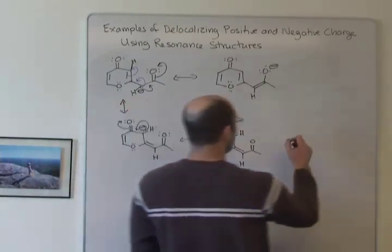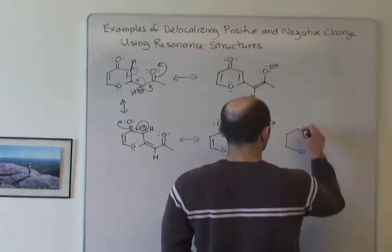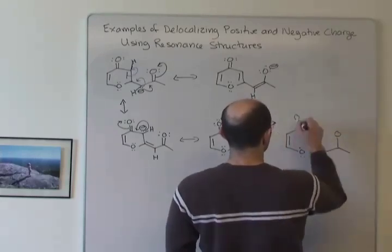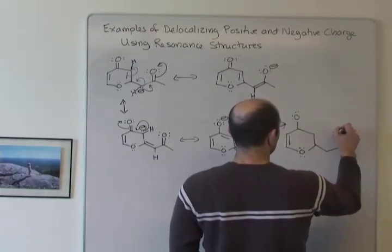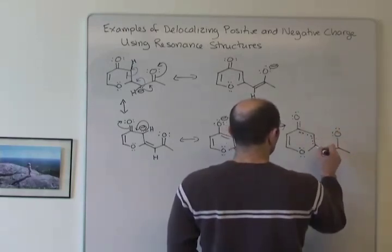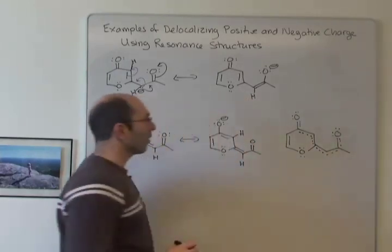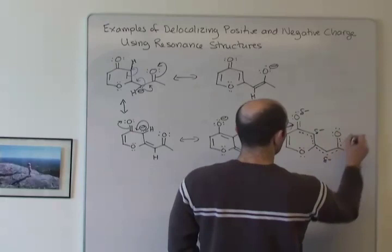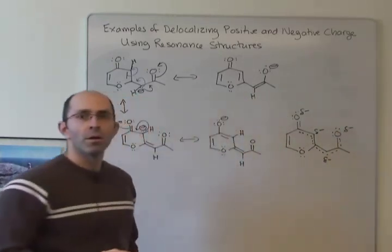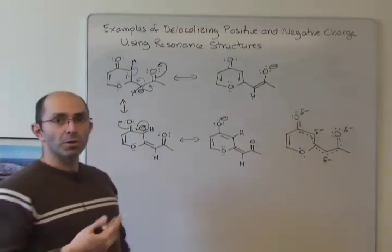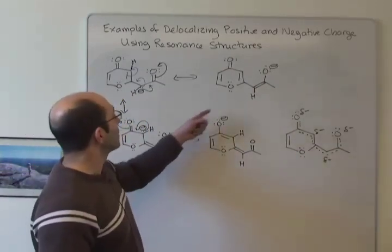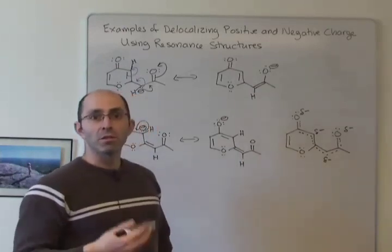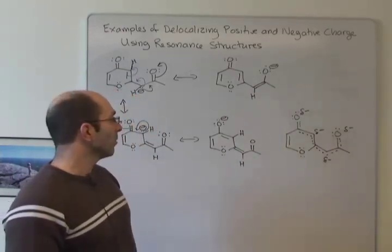So now we can draw the resonance hybrid. Those are all of our partial pi bonds, and the negative charge is shared over four atoms. Not surprisingly, the best resonance structures — the ones that are most stable — are the ones with the negative charge on oxygen. Those are the ones that will contribute most to the resonance hybrid, simply because oxygen is more electronegative than carbon. Those are the more stable resonance structures.